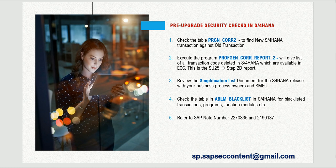These changes are going to impact your security, end users, and business processes. Before you start any upgrades — doing anything in the system after it is technically upgraded by basis — it is good practice to talk to the business process owners about the impact of the data you see from these four steps. You can refer to OSS notes 2270335 and 2190137 for handling blacklisted transactions.